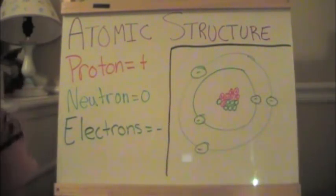So, this is the basic structure of an atom with the protons and neutrons in the center and the electrons orbiting around it.